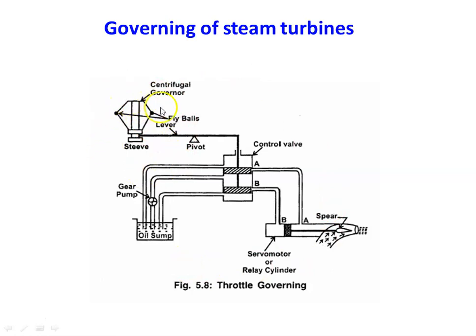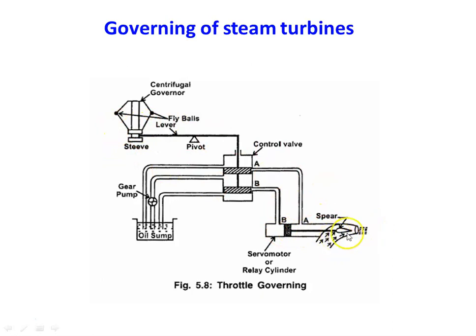Looking at the diagram for throttle governing, we have a centrifugal governor with fly balls and a sleeve. There is a lever connected at a center pivot. The lever is connected to a control valve that has three openings on the left side, all connected to the oil sump, with a gear oil pump at the middle pipe. On the right side there are two openings: opening A goes to the right side of the servo motor plunger, and opening B goes to the left side. At the end of the plunger there is a spear that opens and closes the steam nozzle. In the normal operating condition, there is sufficient steam flow to the turbine for producing the required power, and when the turbine runs at design speed and design power there is no deviation.